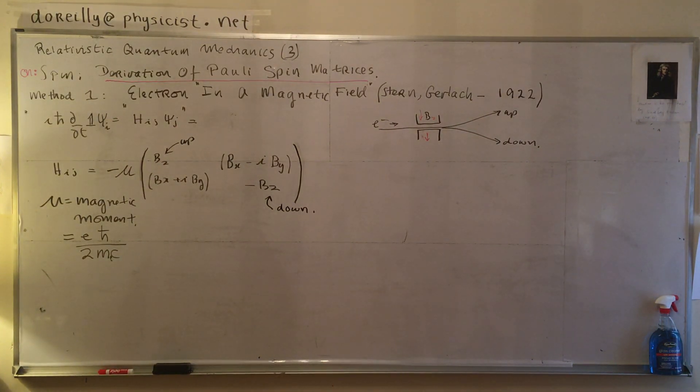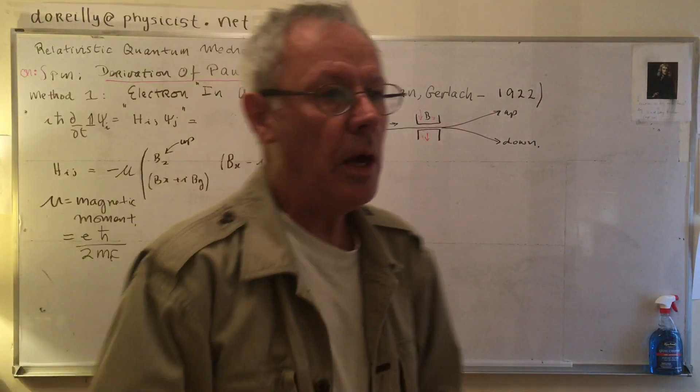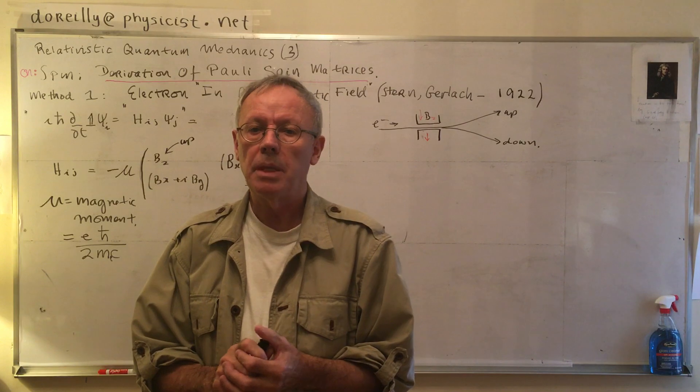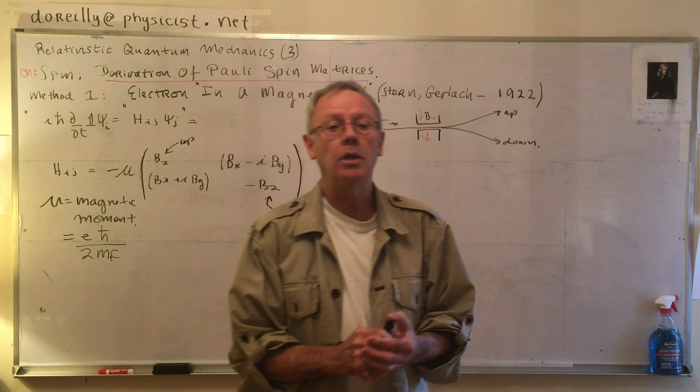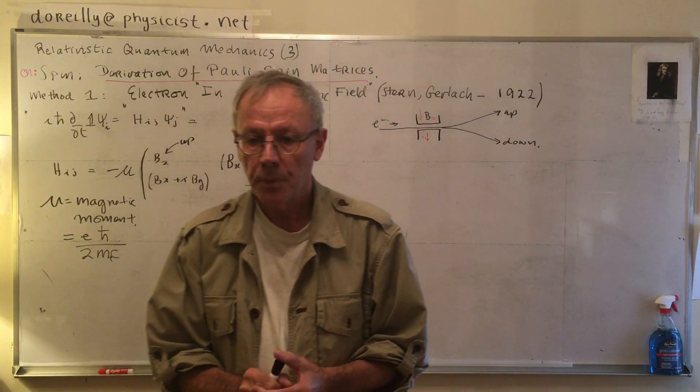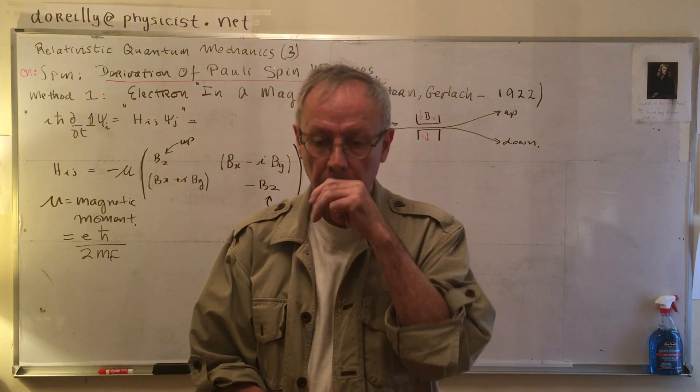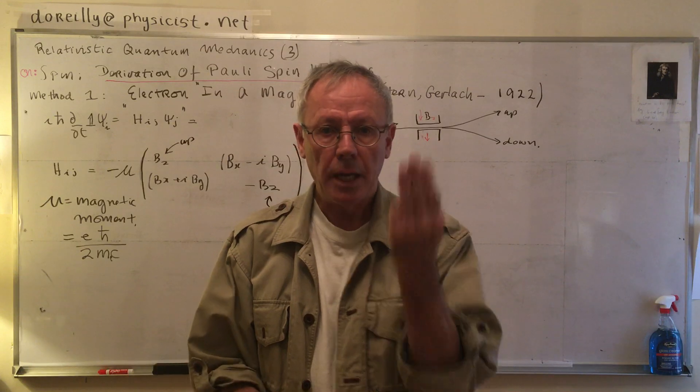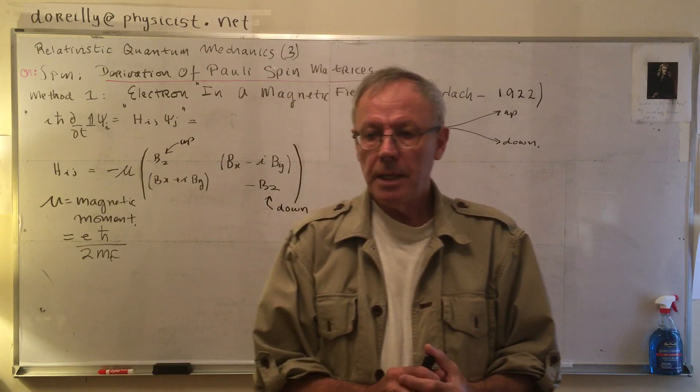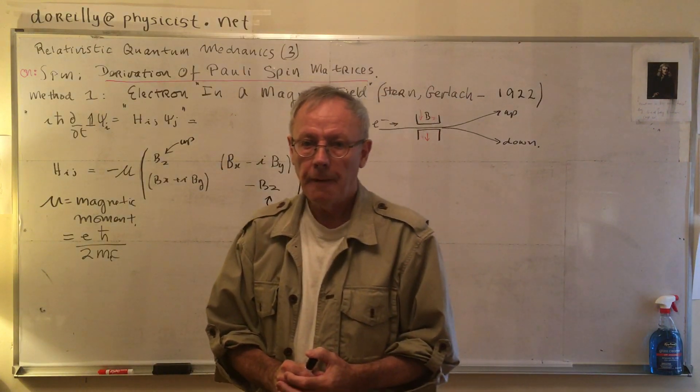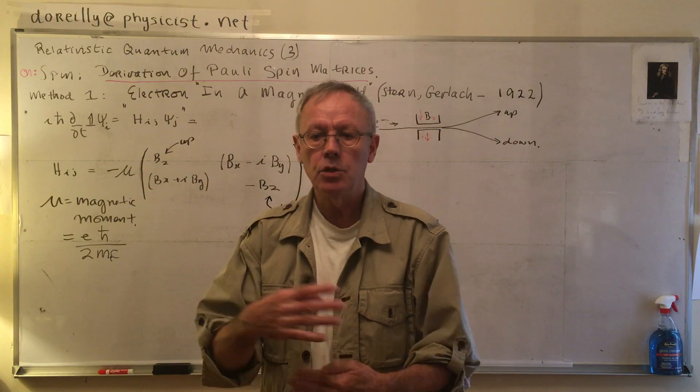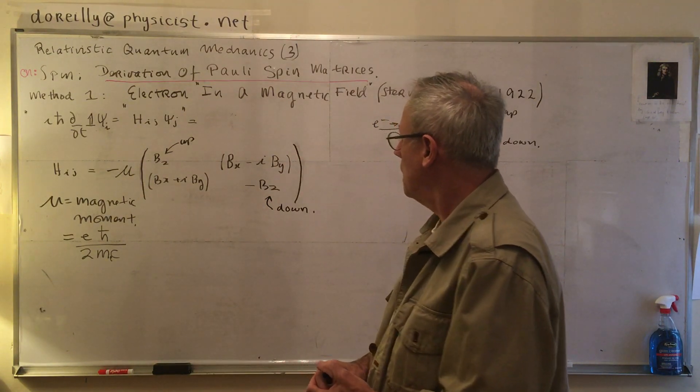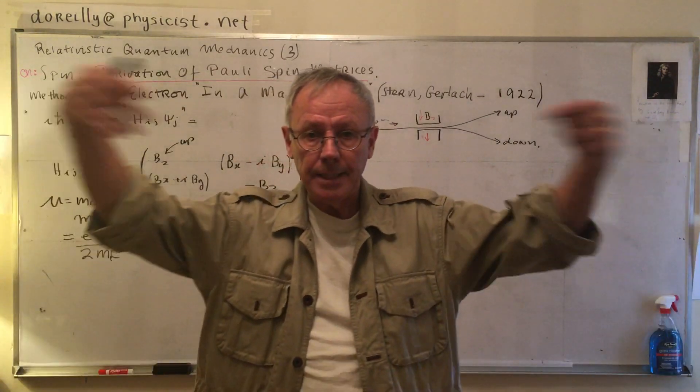I even saw some guy on the web answer questions. Some people had questions and one person said how do you derive Pauli spin matrices. There are several different ways to do it. I'm going to do it three ways. There are probably lots of different ways to do it but I only know three. And then he gets all these fake answers. People just writing too much stuff and not giving an answer.